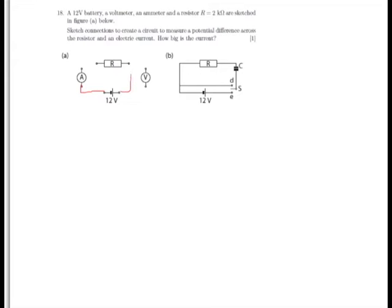So connecting the resistor in series with the power supply, and our ammeter always in series as well. And then once we've done that, we can come back and connect our voltmeter into the circuit across the resistor.